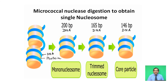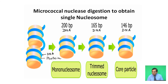If micrococcal nuclease digestion is performed, a mononucleosome or core particle can be obtained. After the first round of micrococcal nuclease digestion, a 200-base-pair DNA fragment is obtained — this is the mononucleosome, representing 200 base pairs of DNA wrapping the nucleosome.